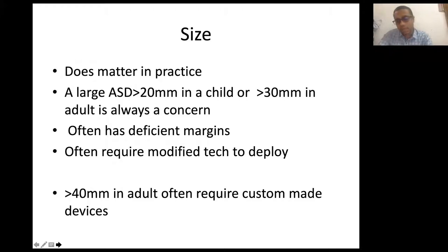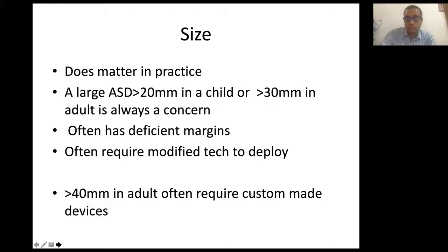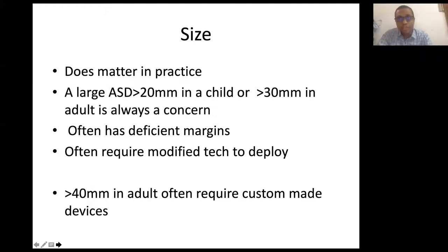Size does matter in clinical practice. A large ASD of more than 20 mm in a child or more than 30 mm in an adult is always a concern. Whenever a child comes with an echo diagnosis of ASD measuring 20 to 25 mm, there are butterflies in my stomach. In our experience, a larger defect invariably has some deficient margins because the atrial septal area is fixed for a particular body surface area. If you have a larger defect, it will leave margins deficient on one side or another.